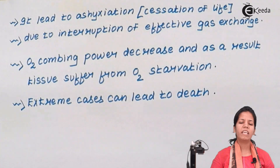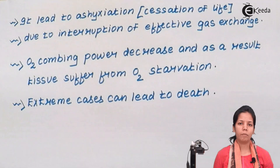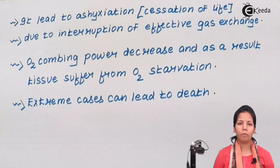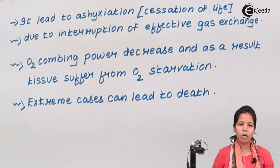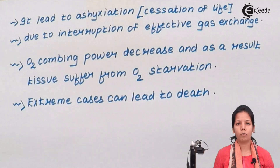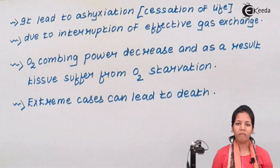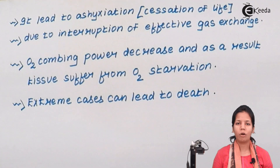Students, in this part of the chapter, we came across carboxyhemoglobin — how CO combines with Hb and carboxyhemoglobin is formed. I hope students are very clear with this concept. Thank you.